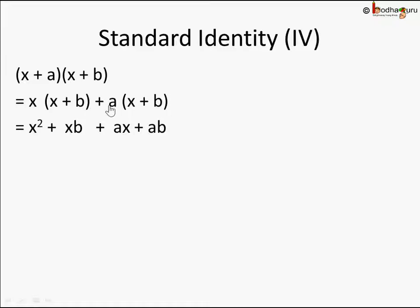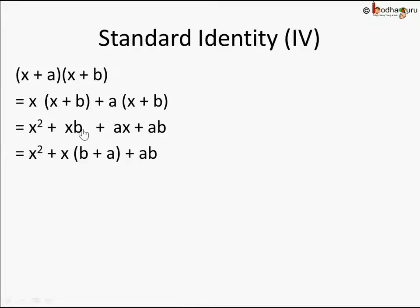We solve each term separately: x·x + x·b + a·x + a·b. Then we can see x² from x·x, xb from x·b, ax from a·x, and ab from a·b. In the middle two terms, x is common, so you can further simplify and write it in three terms: x² + x(b + a) + ab.